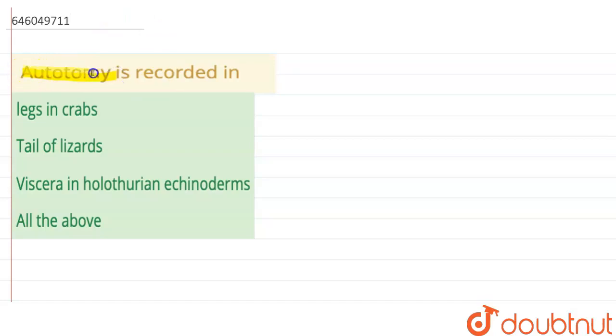We have to discuss autotomy - in which of the following organisms is autotomy recorded? The options are: first, legs in crabs; second, tail of lizards; third, viscera in holothurian echinoderms; and fourth, all of the above.